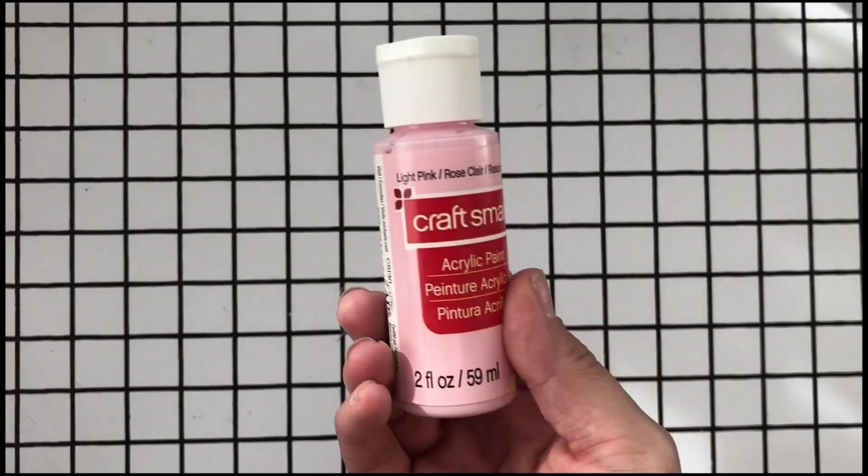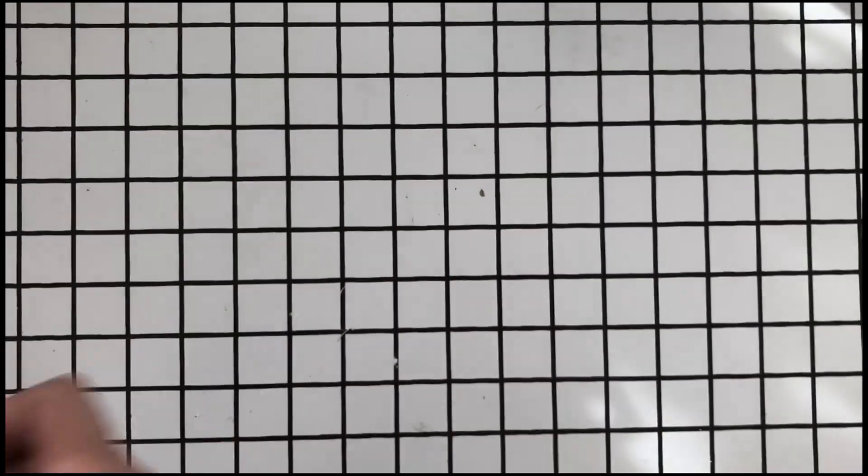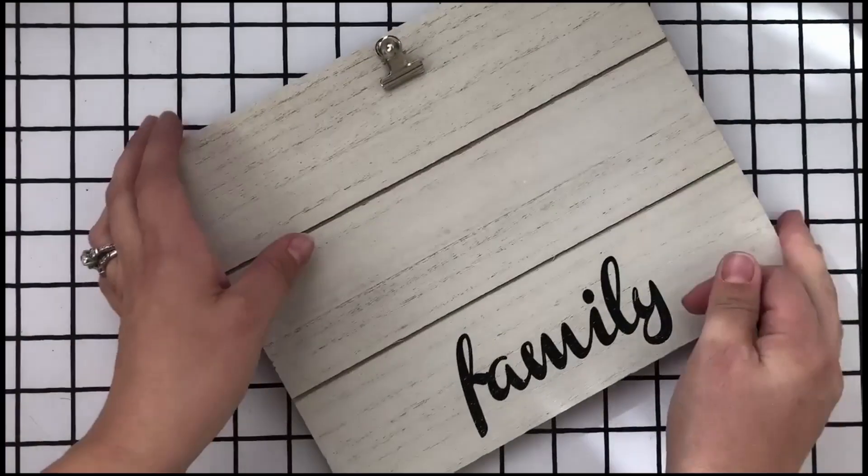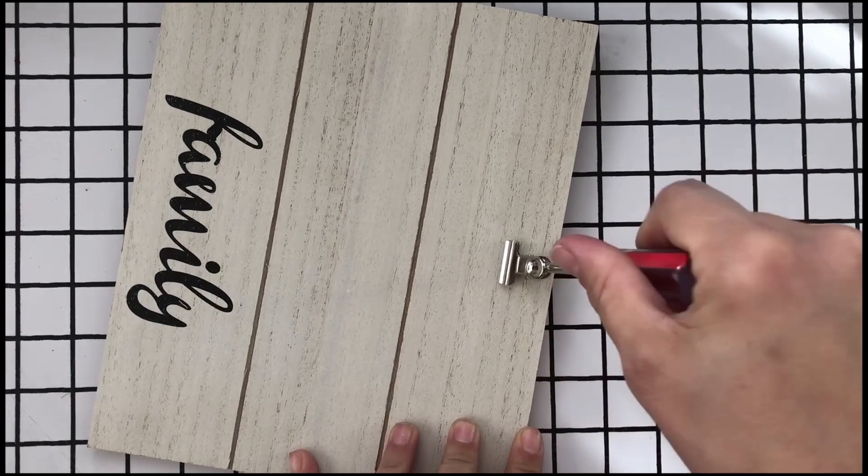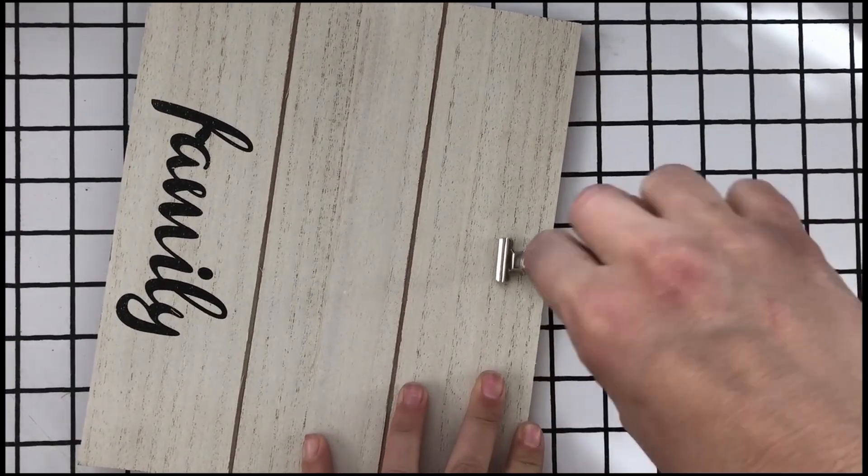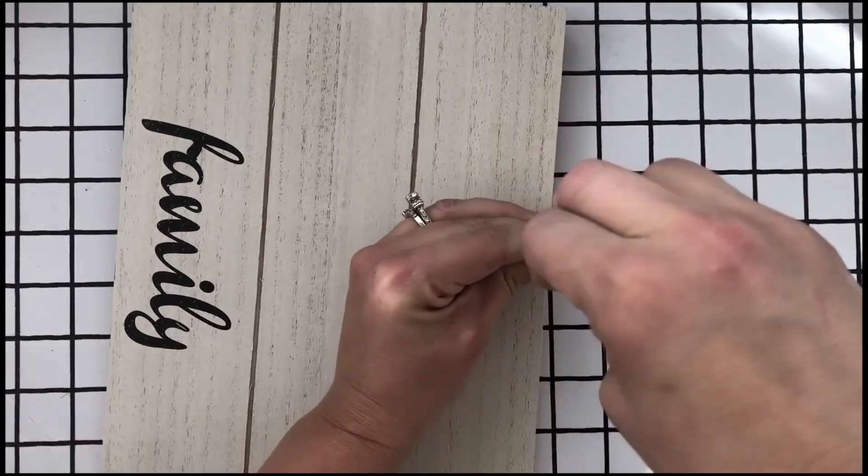So I'll start by removing the clip at the top, and then I'm going to paint the top and the bottom panels with the black acrylic paint.